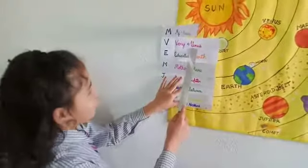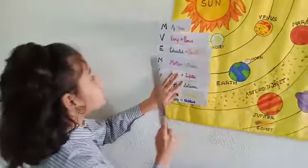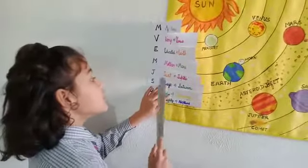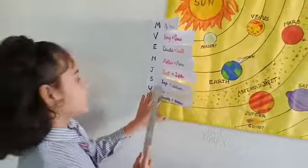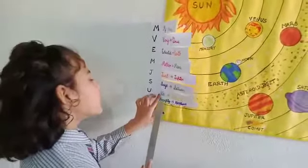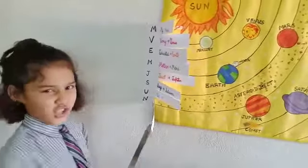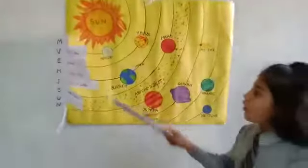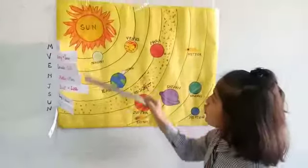M for Mother — M for Mars; J for Just — J for Jupiter; S for Says — S for Saturn; U for Us — U for Uranus; and N for Naughty — N for Neptune. This trick will help you learn the names of all the planets.